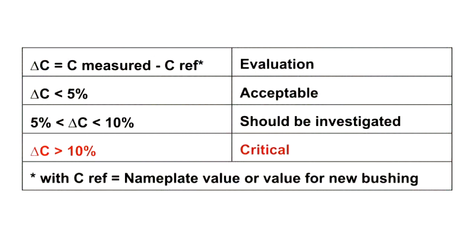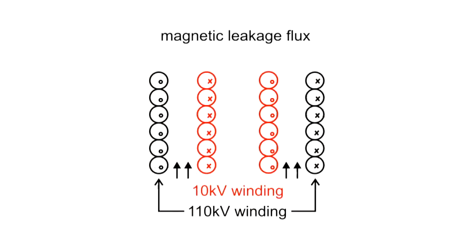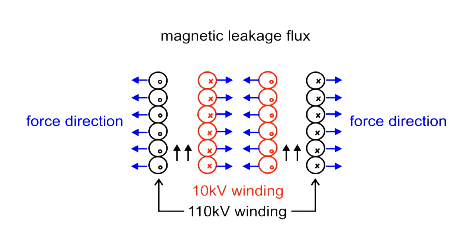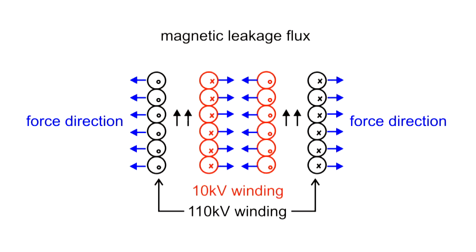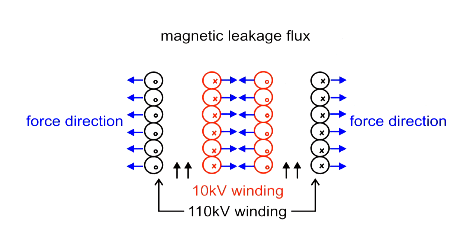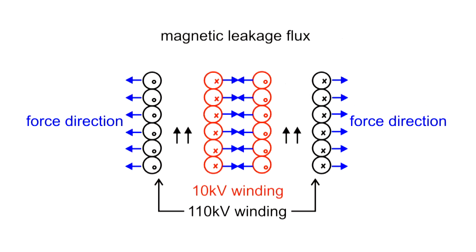For transformer windings, changes in capacitance between the windings indicate a change in the leakage gap. This gap can change due to the deformations caused by high short circuit currents and their corresponding forces.